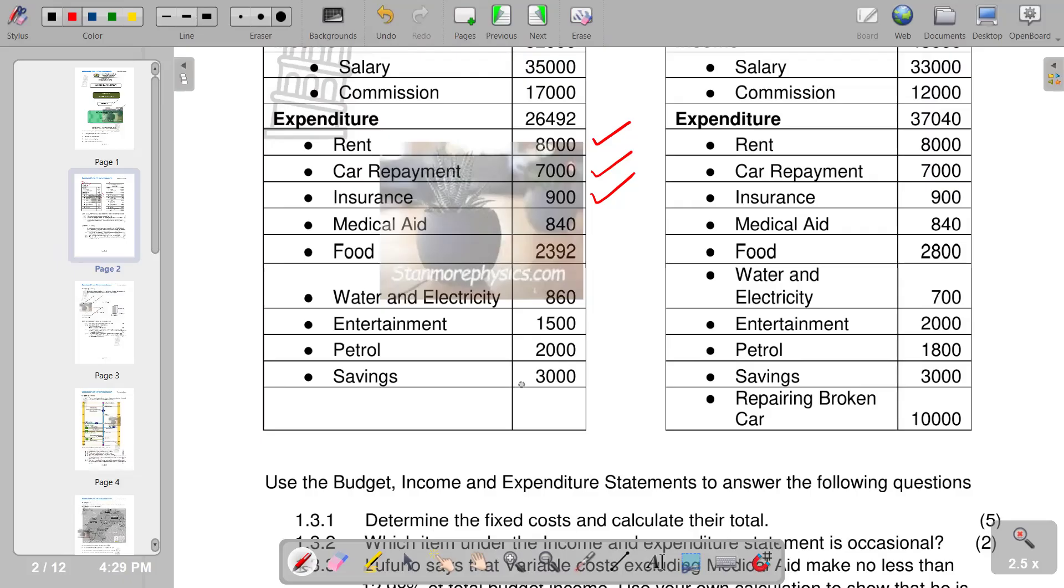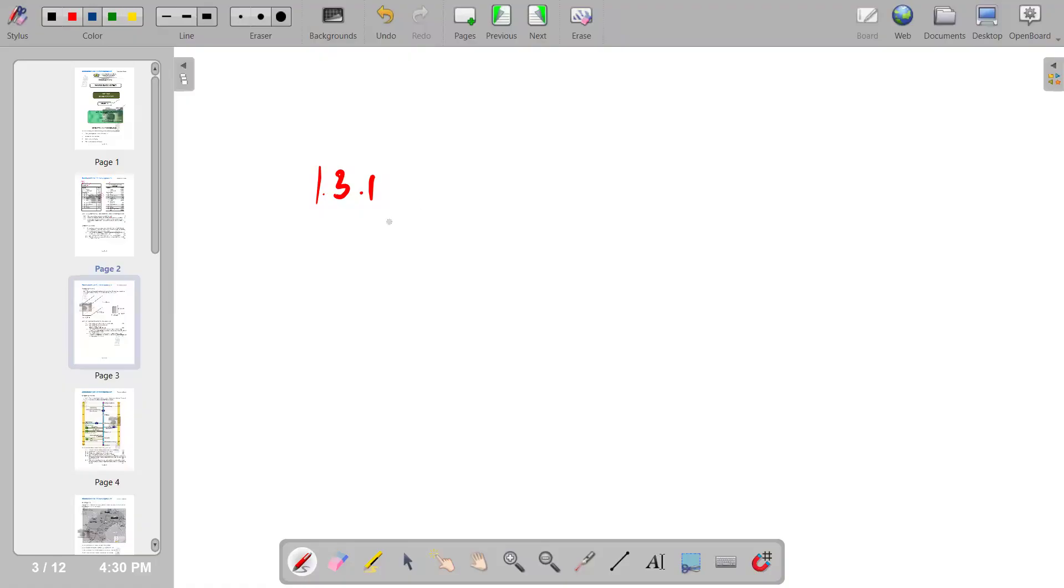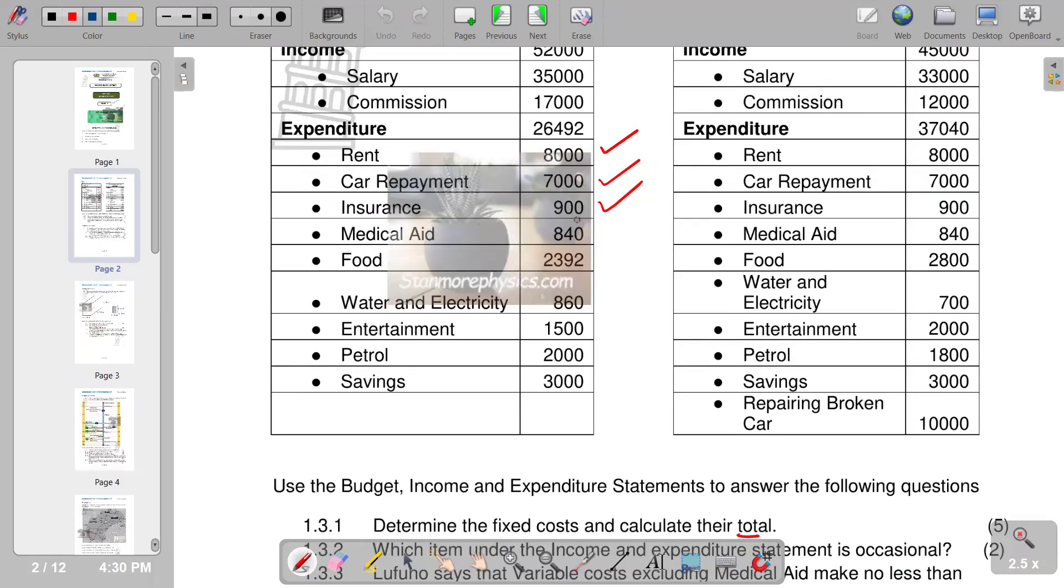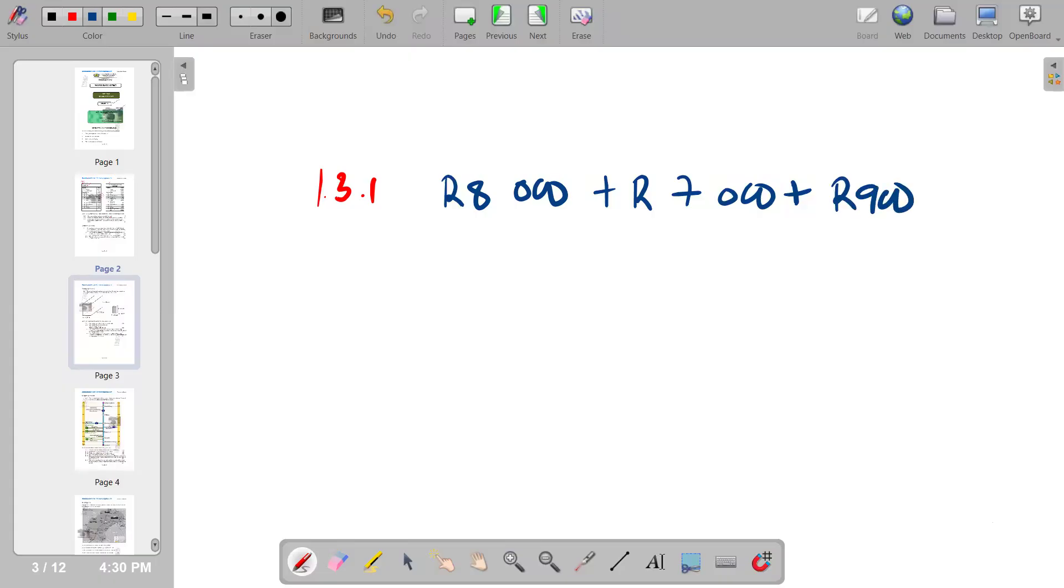We need to calculate their total as indicated in the question. We're going to get them: eight thousand plus seven thousand plus nine hundred. Our rent is eight thousand, car repayment is seven thousand, and insurance is nine hundred. The total that you get is fifteen thousand nine hundred. So that's our total of fixed costs.